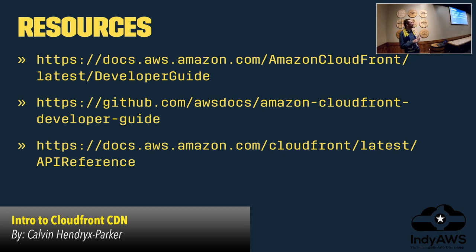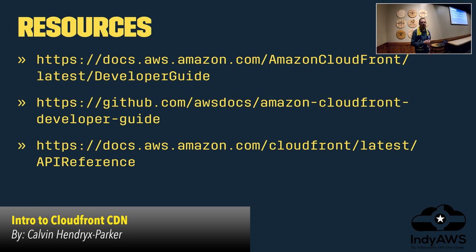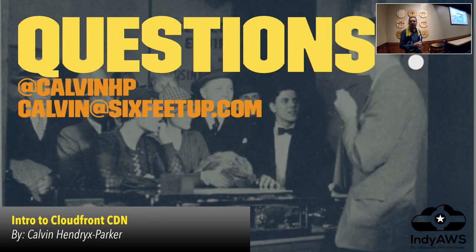The developer guide is very helpful and available under a Creative Commons share-alike license on GitHub for pull requests. One thing to note: if you make an invalidation request or a change to your distribution, be prepared to wait 20 to 30 minutes for that change to propagate to all 144 locations. The API reference is also available, so if you're using Boto or Python or other standard AWS APIs, you can control every aspect of CloudFront distributions from your code. That's the full overview — happy to answer any questions.